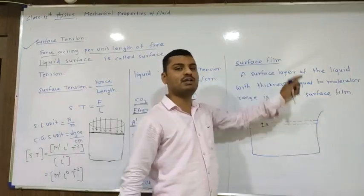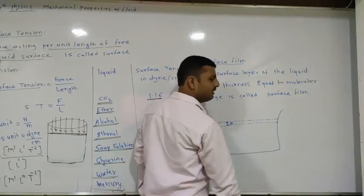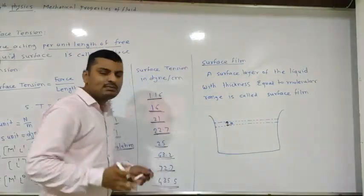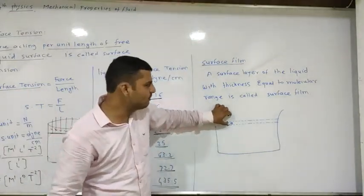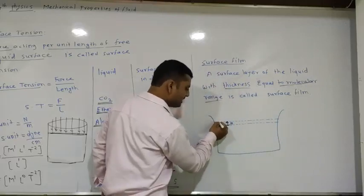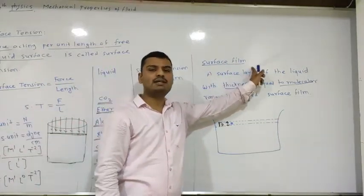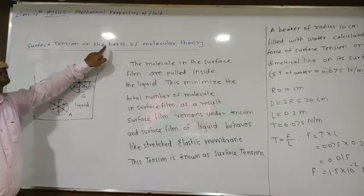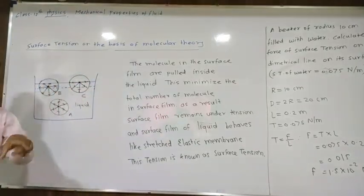The next point is surface film. Consider a container with liquid. A surface layer of the liquid with a thickness equal to the molecular range is called the surface film. These molecular layers of the liquid are very important from the exam point of view.